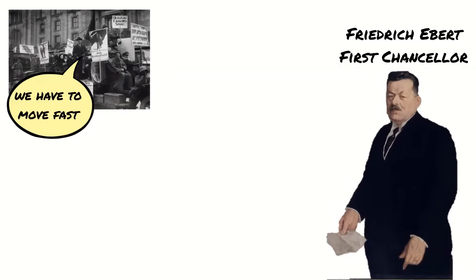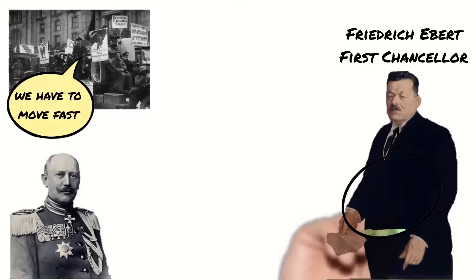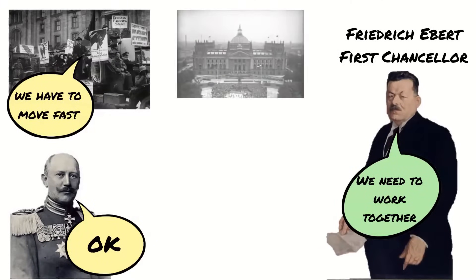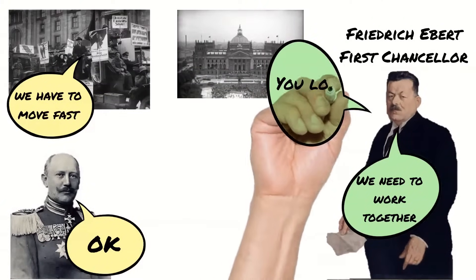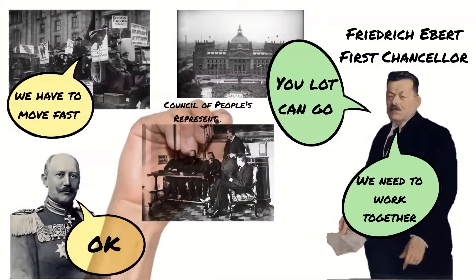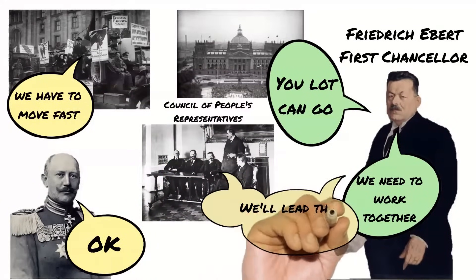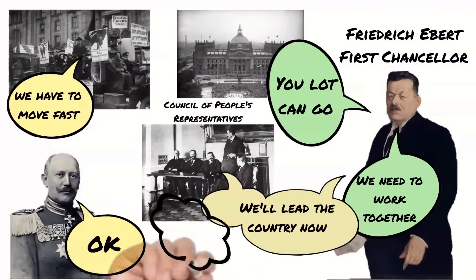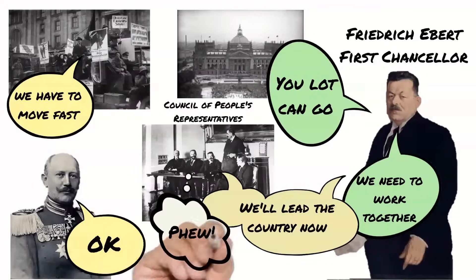The SDP had to be quick in setting up the republic as the crowds were angry and anxious for change. As soon as the Kaiser abdicated on the 9th, the role of Chancellor was passed to Frederick Ebert, the leader of the SDP. Moving quickly, the following day Ebert contacted the leader of the army to agree to work together, then suspended the old Reichstag and formed a council of people's representatives. These quick actions and the use of terms like 'people's representatives' calmed the crowds and they were able to avoid a communist revolution.